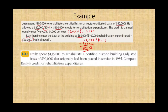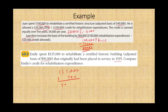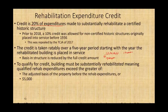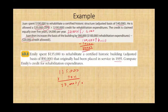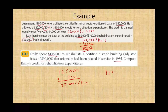Emily spent $135,000 to rehab a certified historic building with an adjusted basis of $190,000, originally placed in service in 1935. The credit is $135,000 × 20% = $27,000, taken ratably over a five-year period. Her net basis increase is $135,000 minus the $27,000 credit.